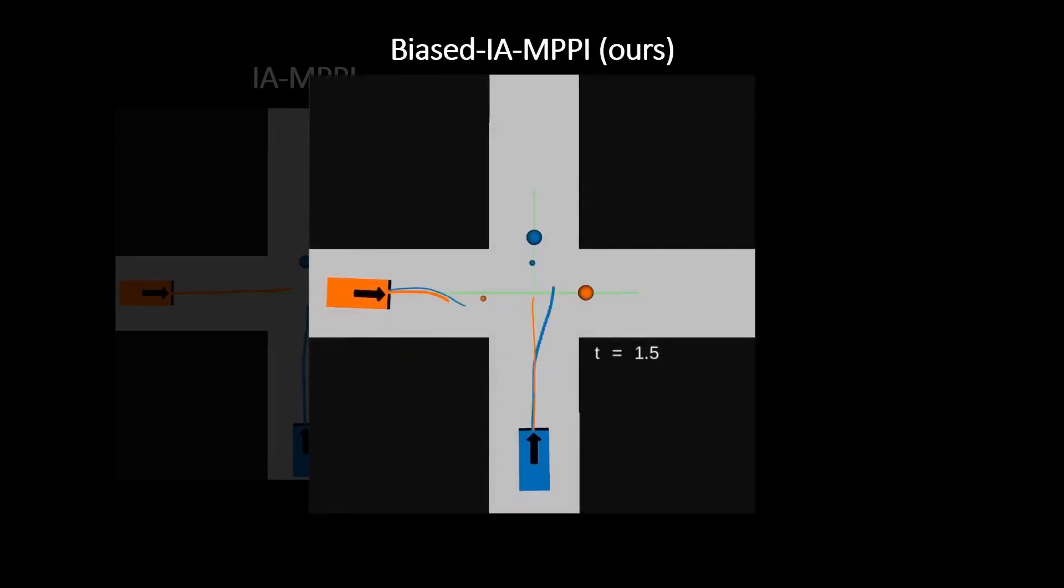In this experiment, we apply our proposed biased sampling scheme to interaction-aware MPPI. Other than sampling around the previous plan, we also sample plans in which the agents brake, move slowly, move fast, and move towards the goal.